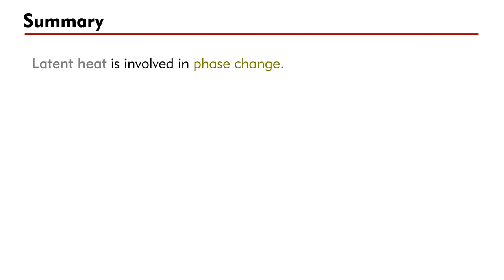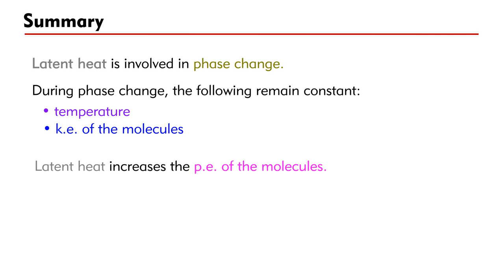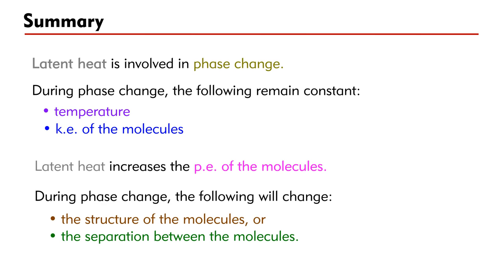In summary, latent heat is involved in phase change. During a phase change, the temperature remains constant. Therefore, the kinetic energy of the molecules remains constant. Latent heat increases the potential energy of the molecules, because during a phase change, the structure of the molecules or the separation between the molecules will change.